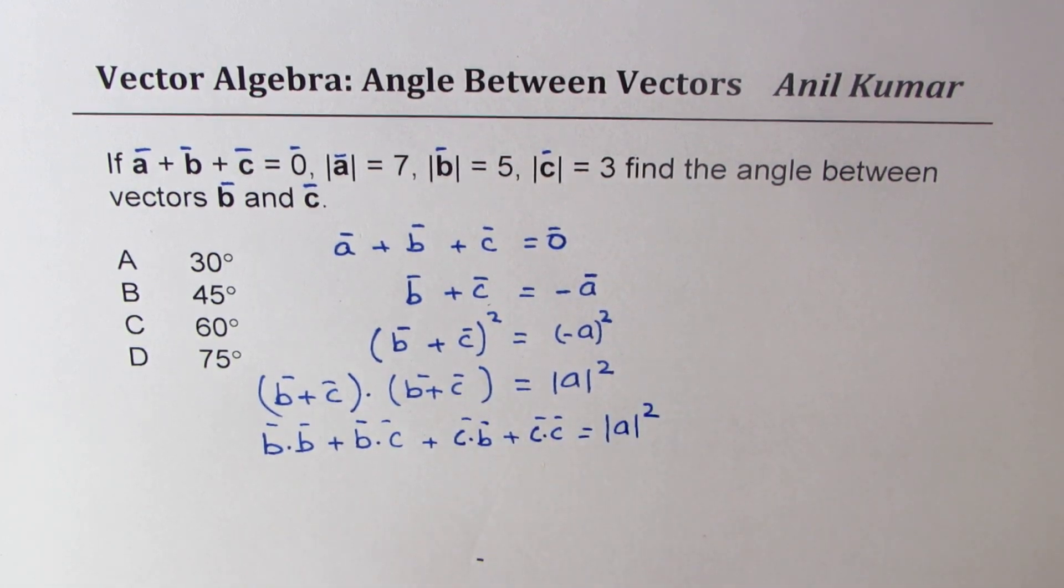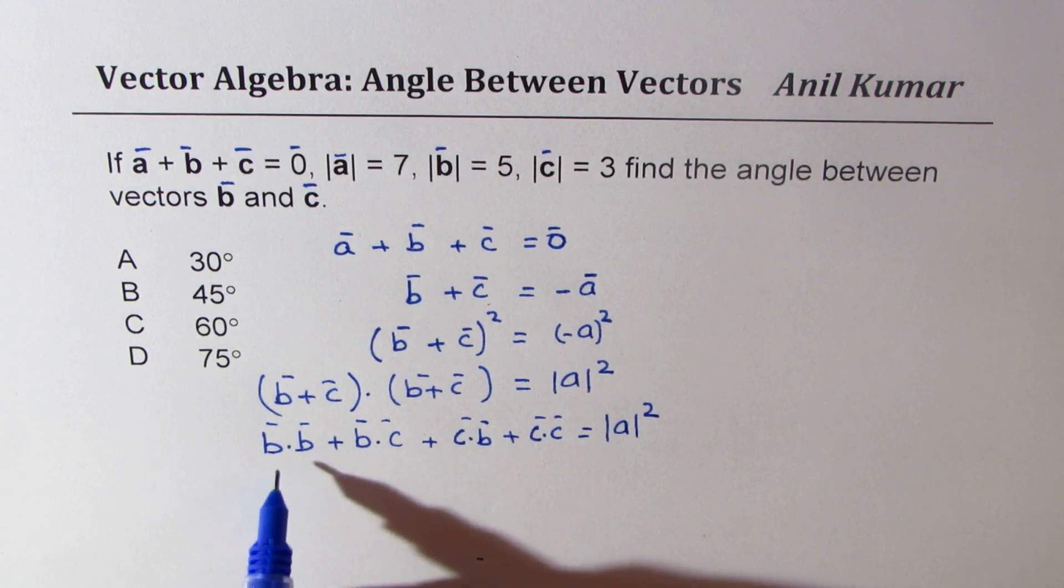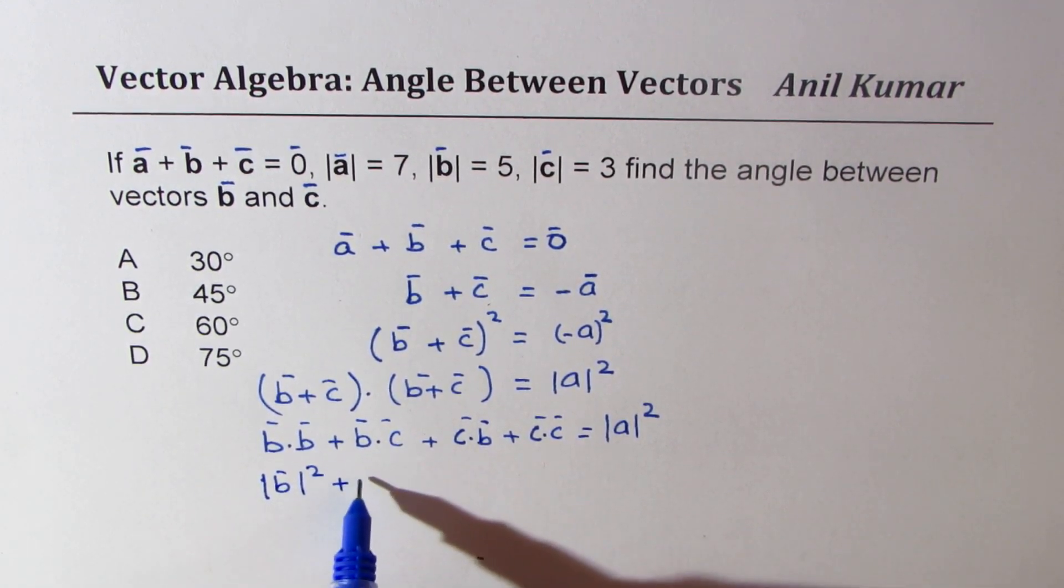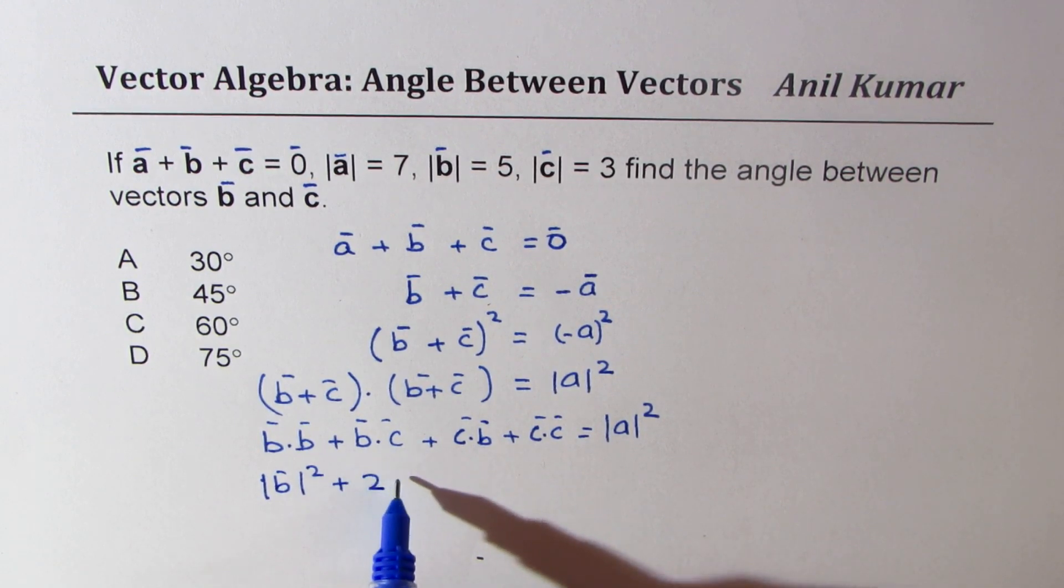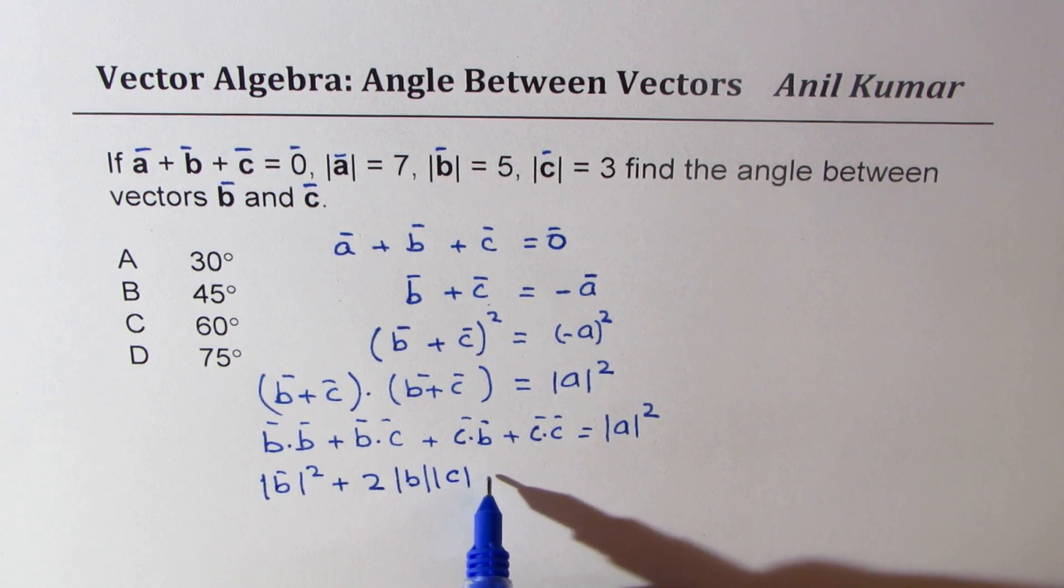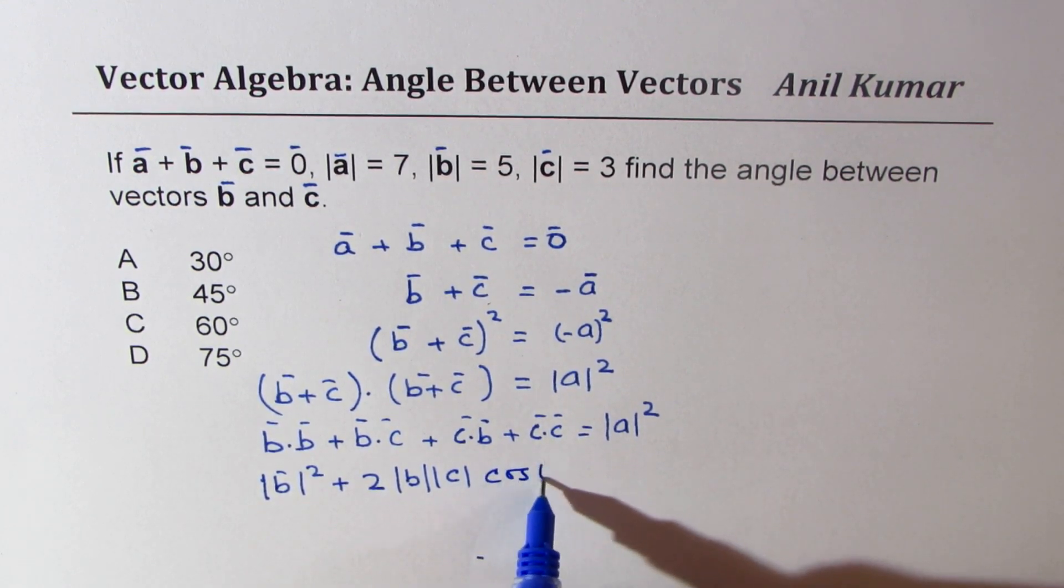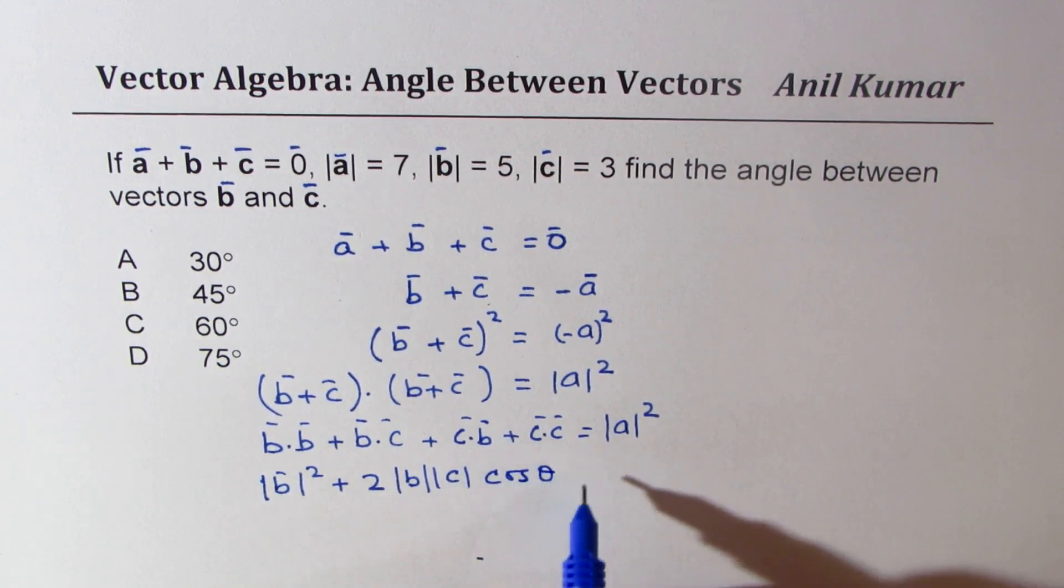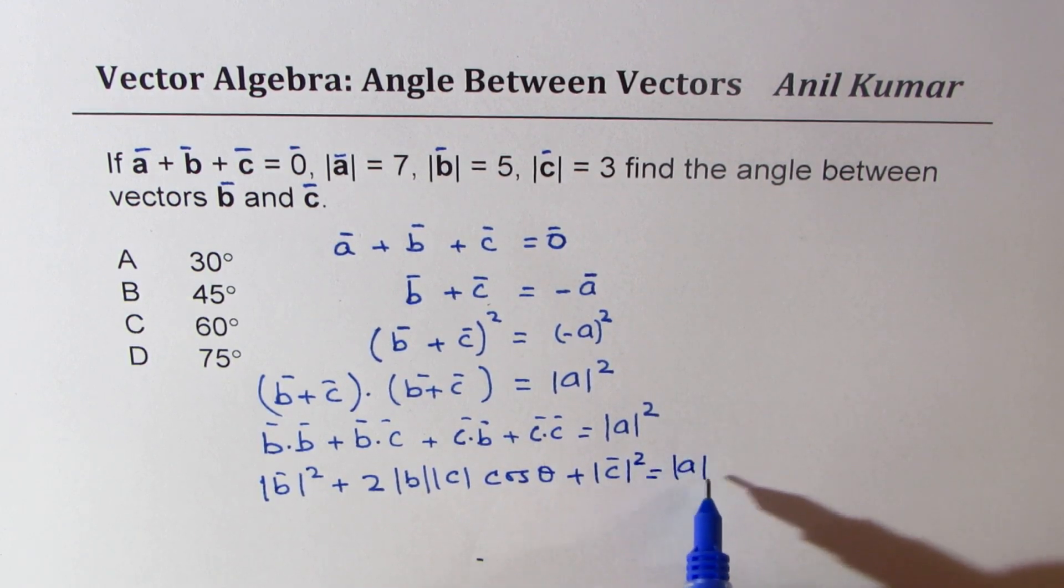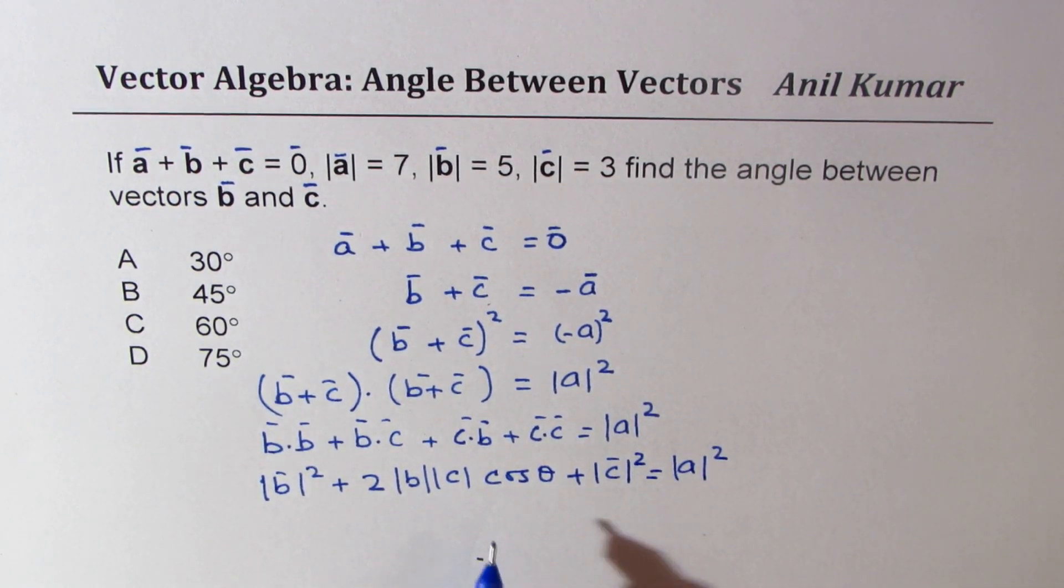This is magnitude of b squared plus two times magnitude of b times magnitude of c times cos theta, where theta is the angle between them, and then we have plus magnitude of c squared equals magnitude of a squared.